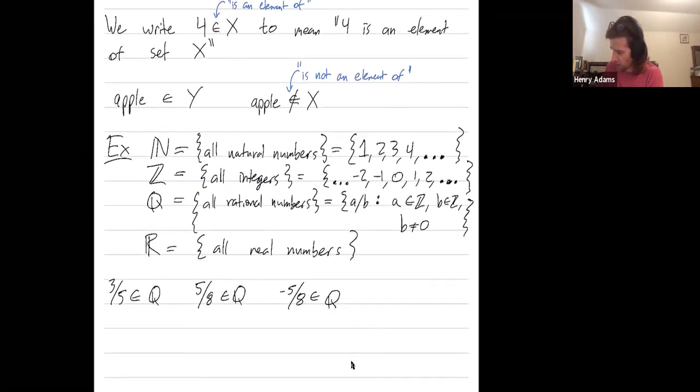And then the last one I'll do, this blackboard bold R. This is the set of all real numbers. So if I had to draw the set of all real numbers, I would draw it as this horizontal number line.